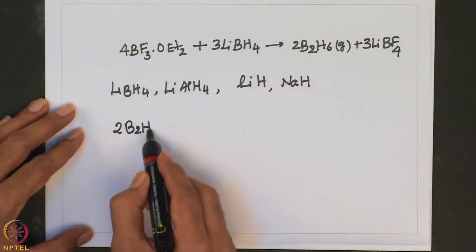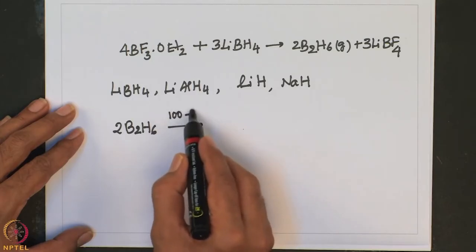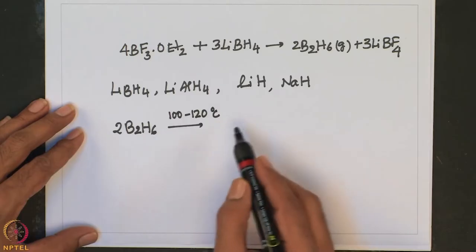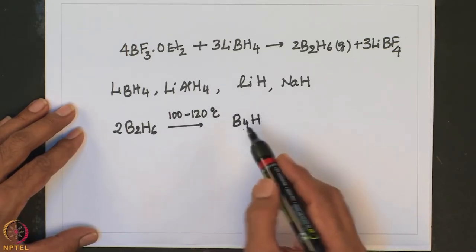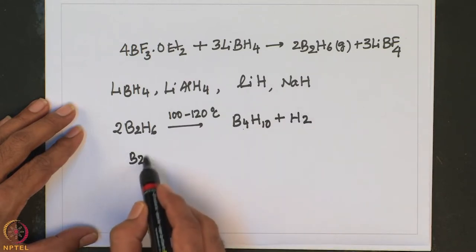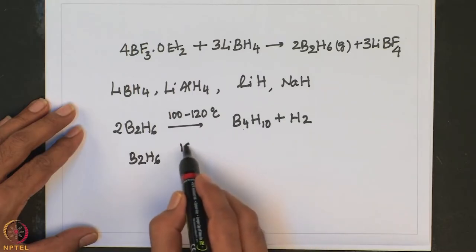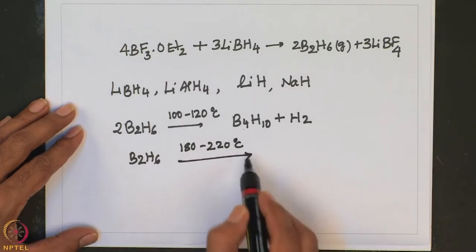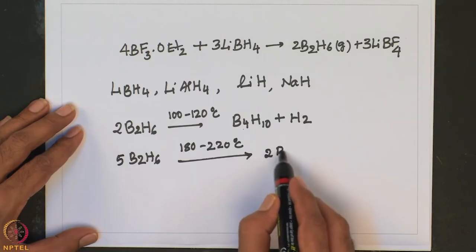Higher boron hydrides contain the same structural features as B2H6, where we come across three-center two-electron bonds. To prepare higher boron hydrides, one simply takes diborane and heats it at different temperatures. For example, B2H6 heated at 100 to 120 degrees centigrade leads to the formation of B4H10 plus H2. If diborane is heated to 180 to 220 degrees, it leads to the formation of B5H9.